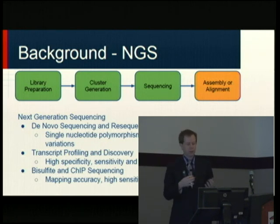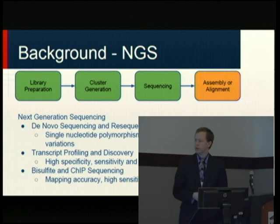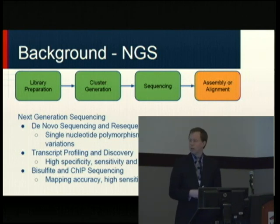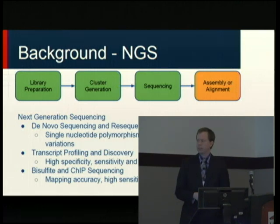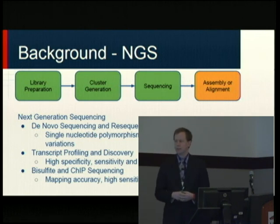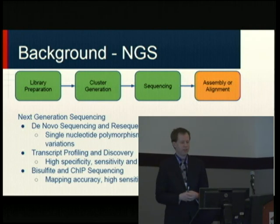With epigenetic data generation, you prepare a library, generate clusters, go into the sequencing process, and that gives you your reads, which you can then assemble or align. There are different methodologies — SNP discovery, insertions/deletions — but a large field for epigenetics is ChIP-sequencing and bisulfite sequencing, where small antibodies pull down sequences to determine epigenetic modifications at large scale.